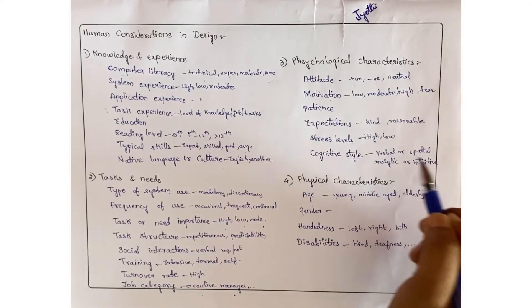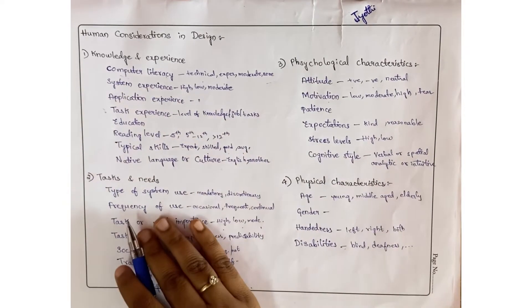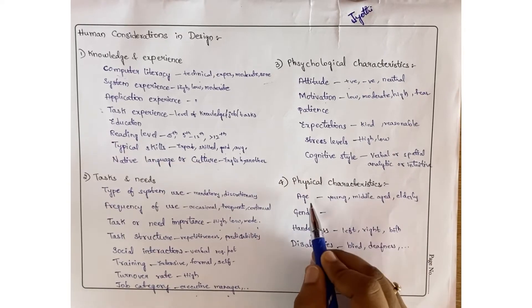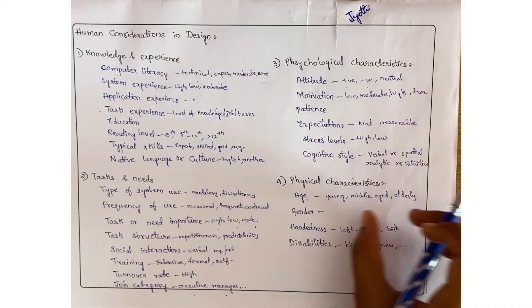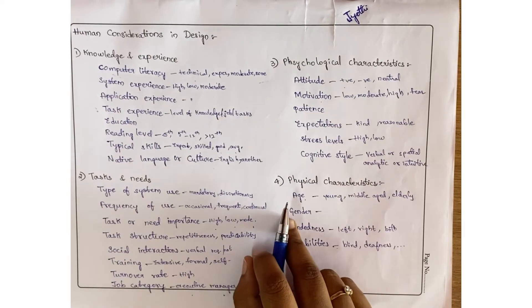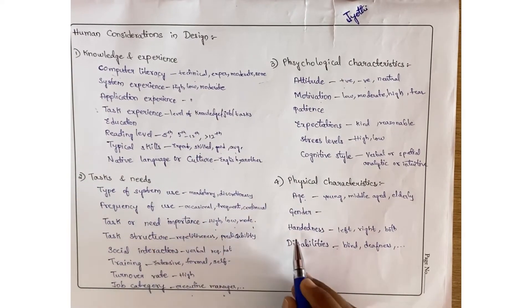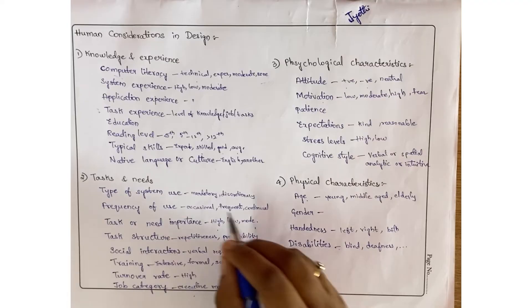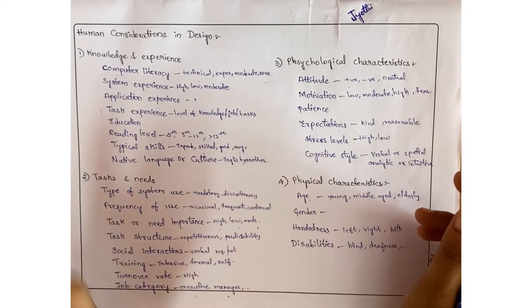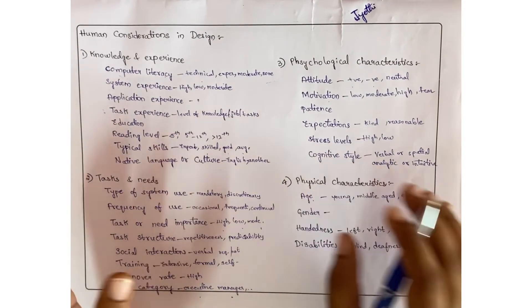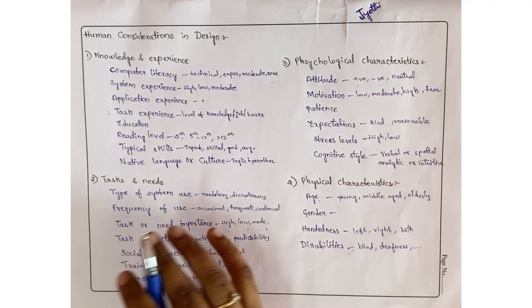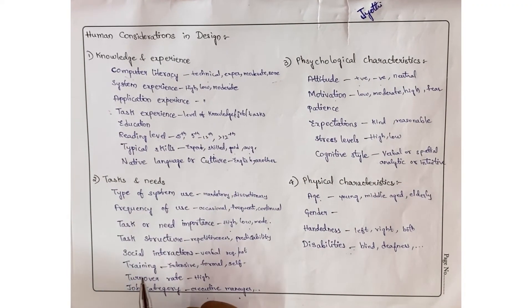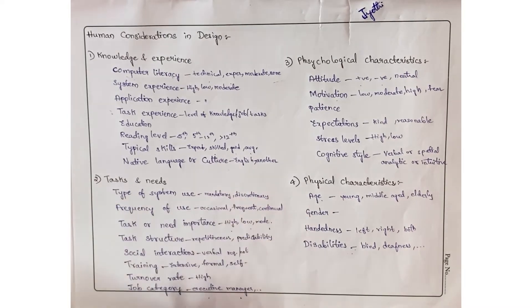Coming to physical characteristics - age is like child, young, middle aged, or elderly. Gender - male, female, or other. Handedness - some may write with right hand, some with left hand, and some with both hands - that is ambidextrous. Disabilities - few people have physical disabilities like blind, deafness, all these things.